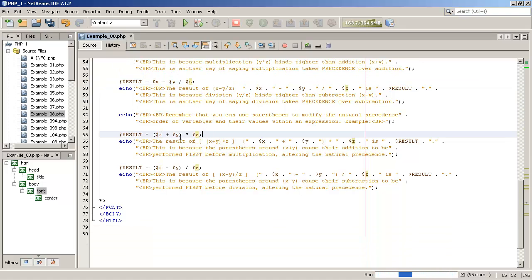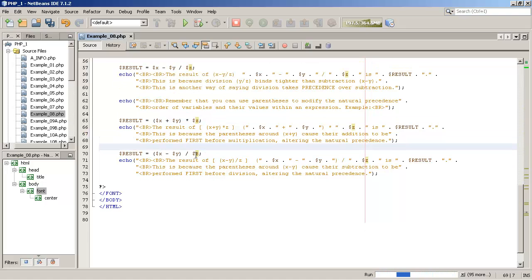Now down here as an example, I'm using parentheses to alter precedence. So although normally this would bind tighter and this would bind tighter, if I use parentheses, then I can force addition to occur first. And then the result of the addition process between X and Y would be multiplied times Z. The same here is true for division. I could force subtraction to have a higher precedence than what is normal. Normally division has higher precedence than subtraction. And in this case, what's in parentheses would be done first. So X minus Y and then the result of that would be divided by Z.